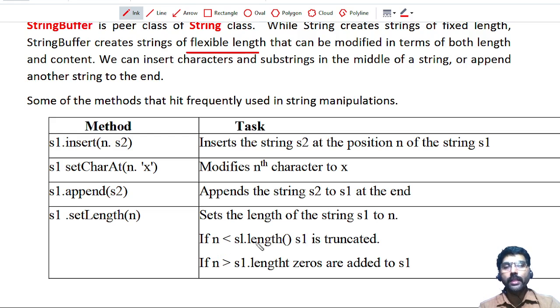If n is less than S1.length(), S1 is truncated. That means the value given for n should be less than the original length of the string. Then the remaining characters are truncated.